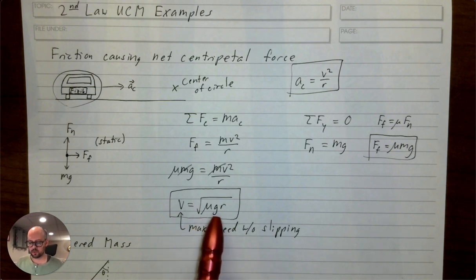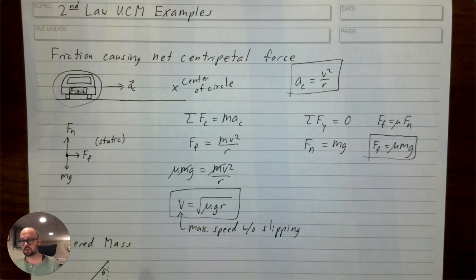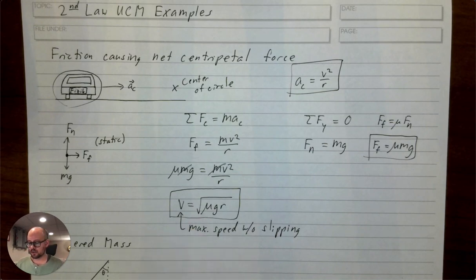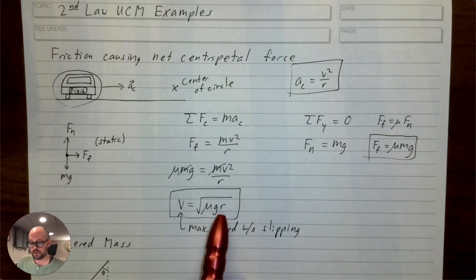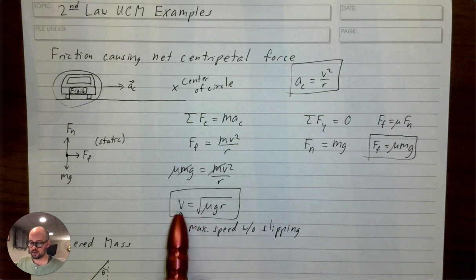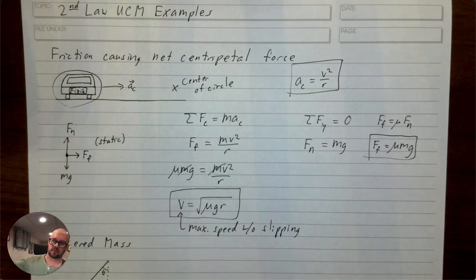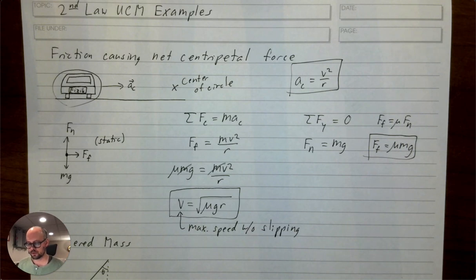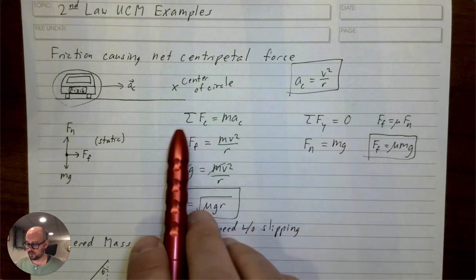The maximum speed is defined by μ, g, and r. On Earth, g is constant. μ depends on the road and your tires — older tires mean smaller μ, brand new road means larger μ, rain or ice means smaller μ. The radius also matters: a really big turn means a really big radius and you can go fast, but a smaller and smaller turn means you can't go as fast without slipping.